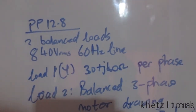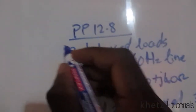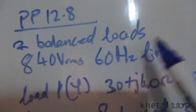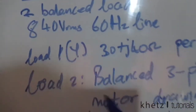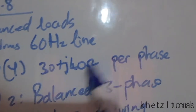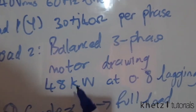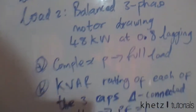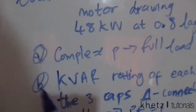Welcome to catch tutorials. In this video I'll be doing practice problem 12.8, which is probably the last problem in this chapter. We're given two balanced loads and 840 Vrms, 60 Hz line. One load is Y-connected with an impedance of 30 plus j40 ohms per phase, and the second load is a balanced three-phase motor drawing 48 kilowatts at 0.8 lagging power factor.